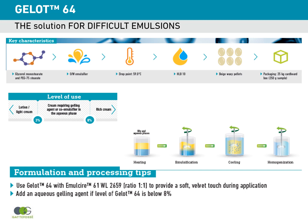GELOT64 also offers different viscosities depending on the level of use. Below 3%, you already get a light cream or lotion, and above 3% you get a very rich cream. This product can also be associated with emulsifier 61 at a 1:1 ratio to obtain a very nice texture with a soft and velvet touch.